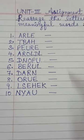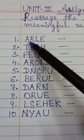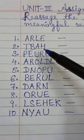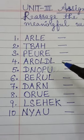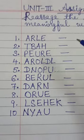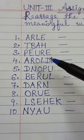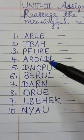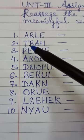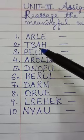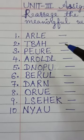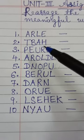So the first word's letters are A-R-L-E. I am reading these letters so that afterward you will not say you couldn't understand. I have written all of them in capitals so that you can read clearly.